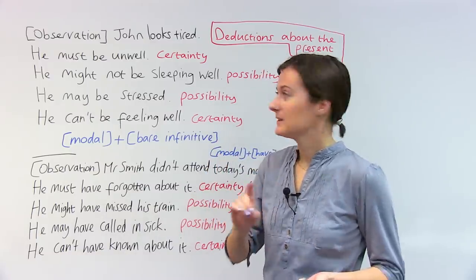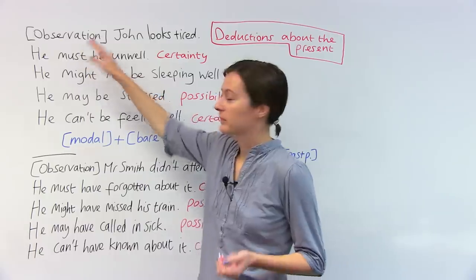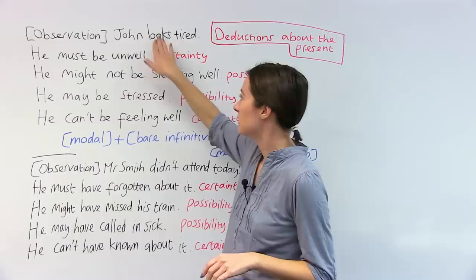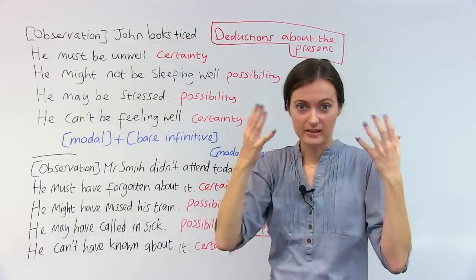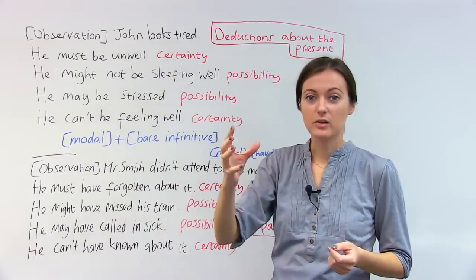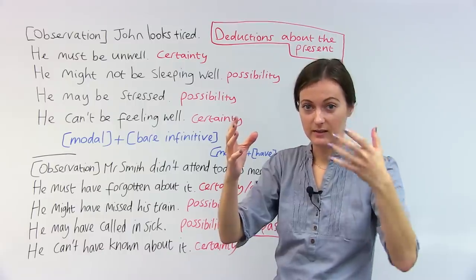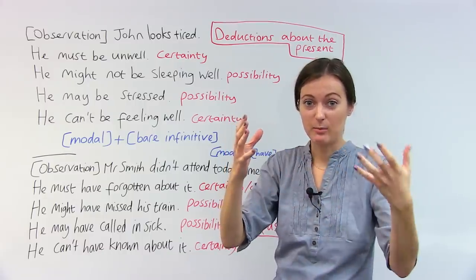Well, let's imagine there's a situation. You see something, you observe something. This is your evidence. John looks tired. This is what you see, this is your evidence. Your deduction is how you interpret what you see. Your deduction is what you say about what you see.